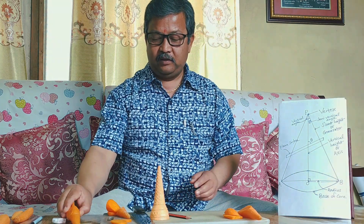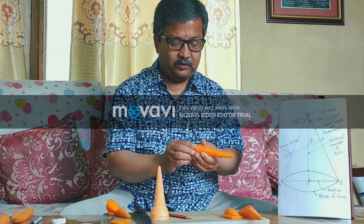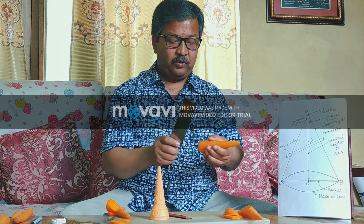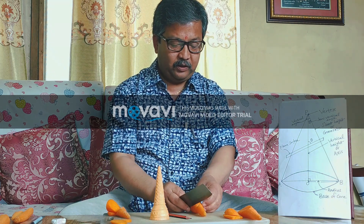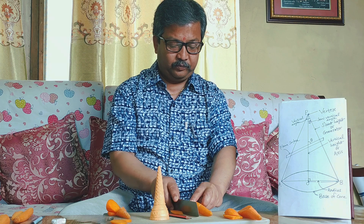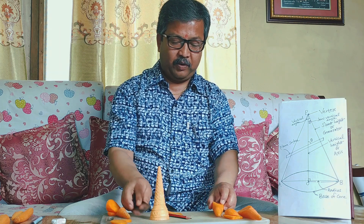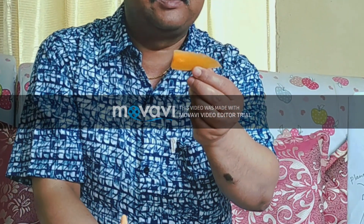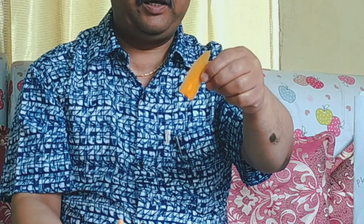Fourth case: we take the cone and cut it with a plane parallel to the axis — that is, parallel to the vertical height. We get a shape known as the hyperbola. The hyperbola is obtained after cutting the cone with the plane which is parallel to the vertical height, giving us the geometrical figure called the hyperbola.